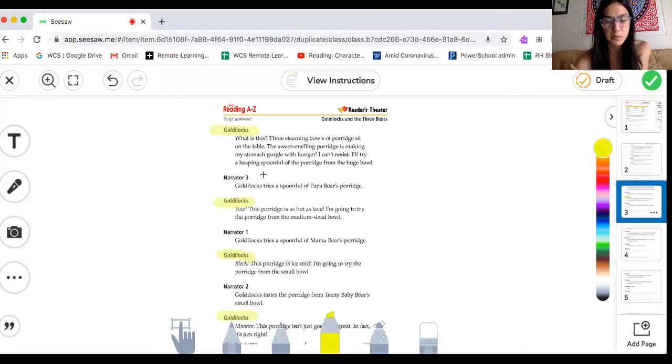Now I see narrator 3. You won't read this part, but if you want for practice, you can ask a grown-up to come and read you the lines in between. So if a grown-up or older brother or sister is nearby, they can read narrator 3 and then you know that it's your turn. Goldilocks tries a spoonful of Papa Bear's porridge. Now I see Goldilocks again, so I know it's my turn to read. Yow! This porridge is hot as lava! I'm going to try the porridge from the medium-sized bowl.